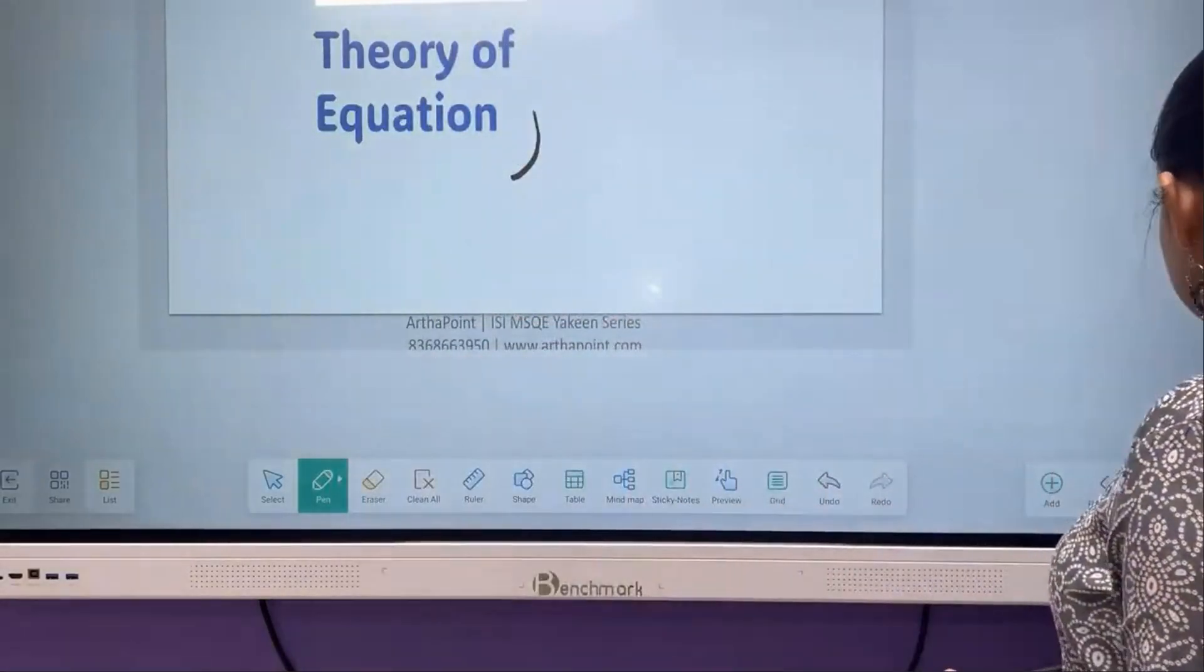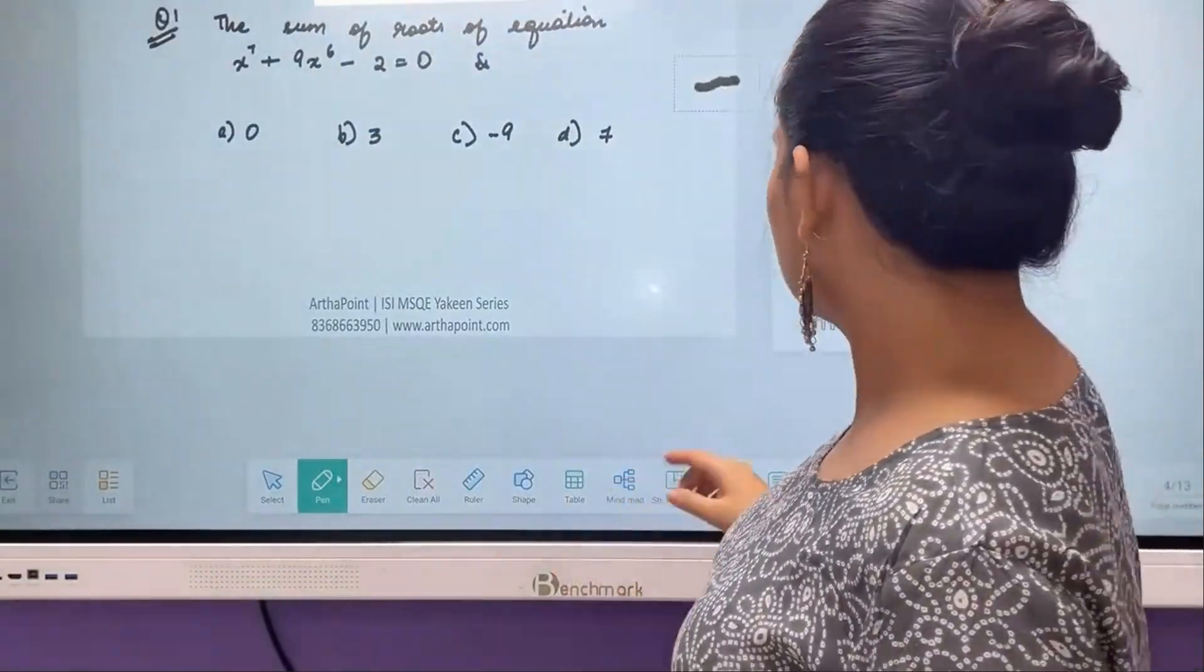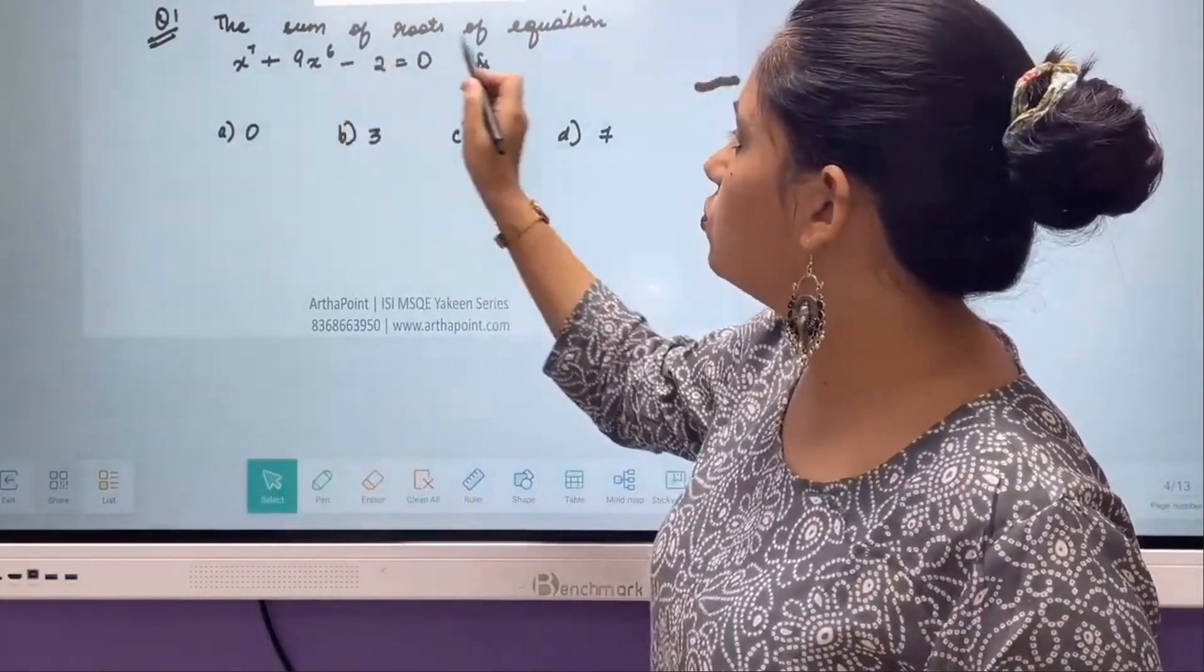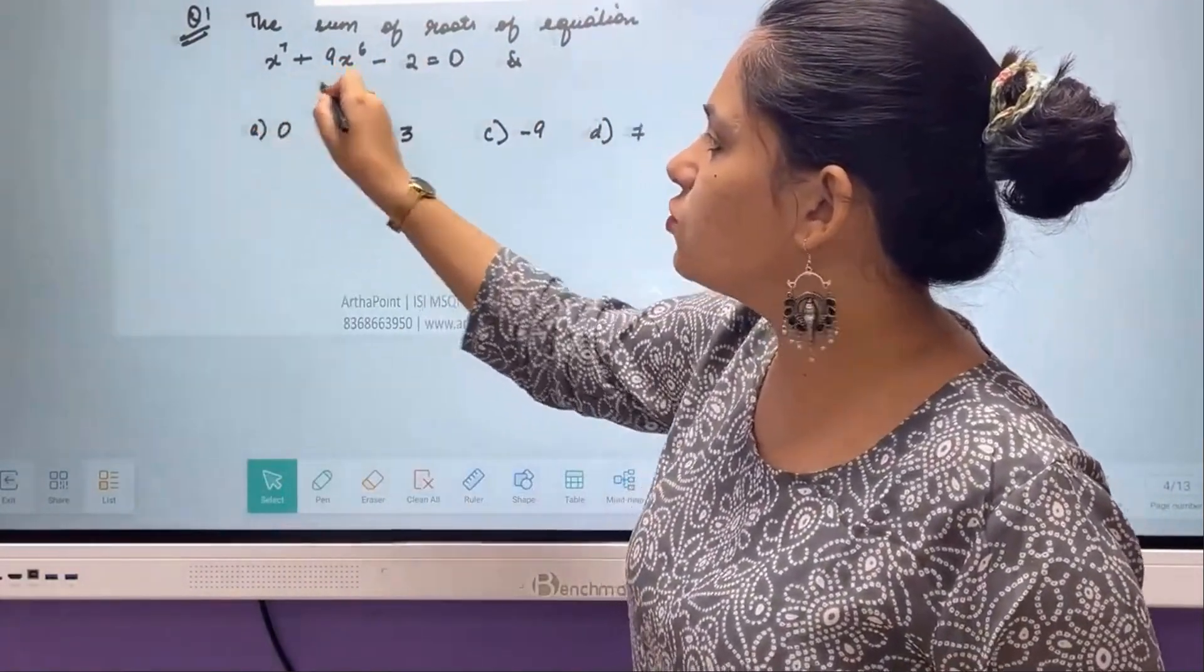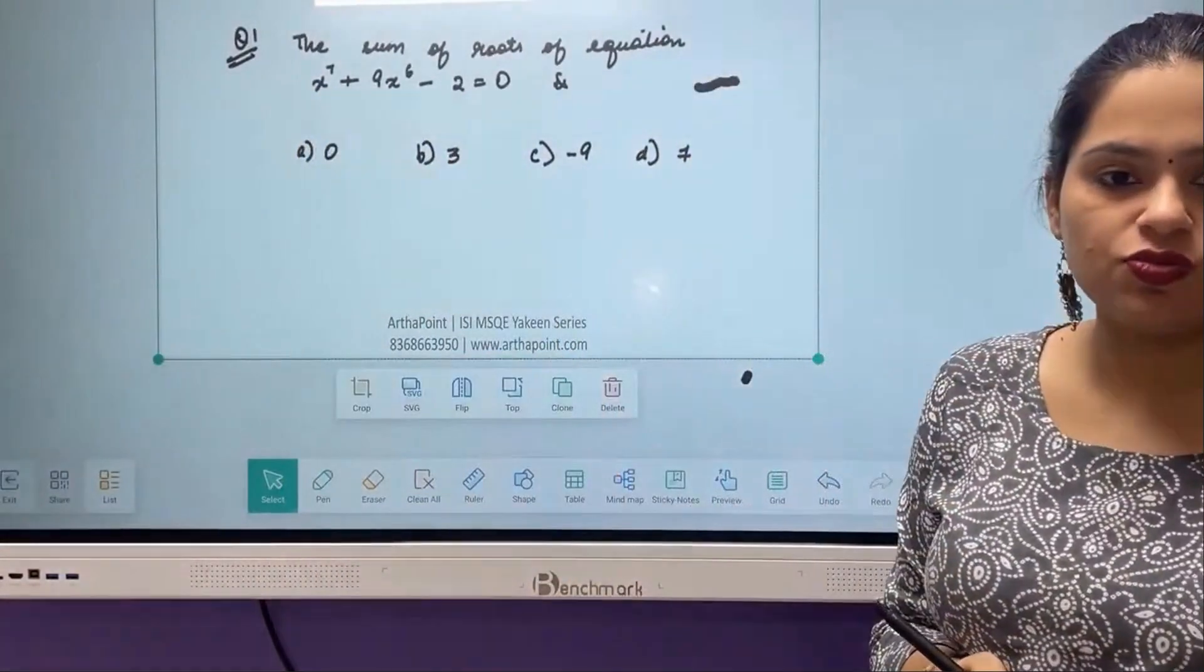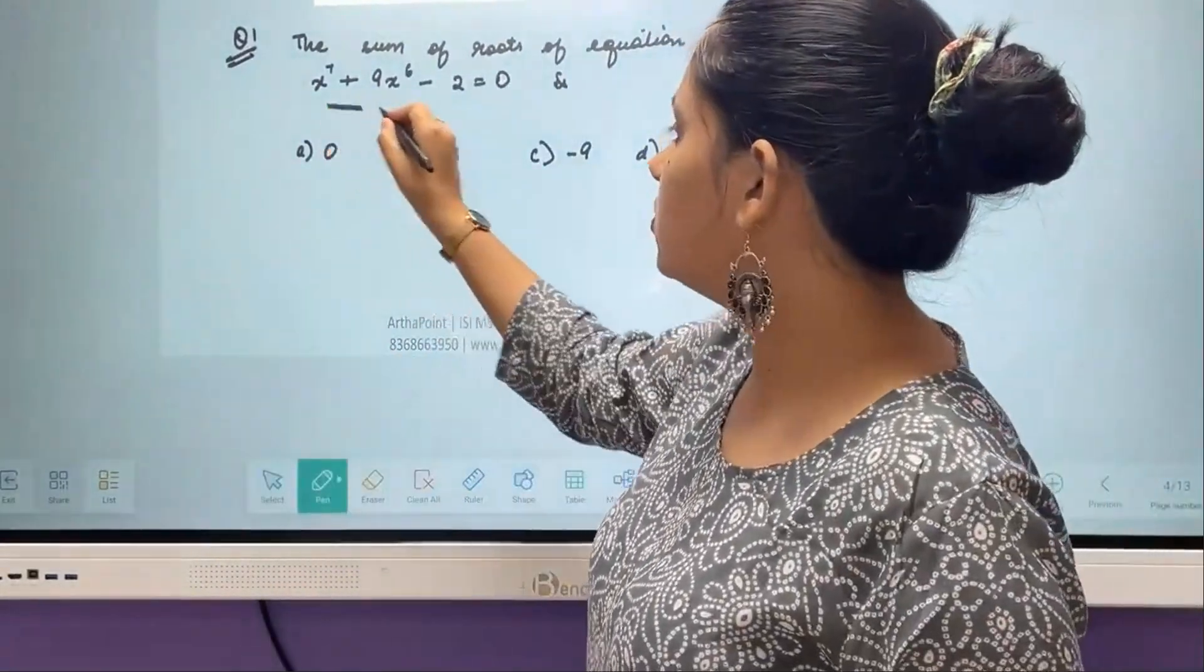So the first question for today is this. The sum of roots is basically given to you. The equation is given to you as x squared plus 9 x to the power 6 minus 2, and it is asking you what is going to be the sum of the roots.